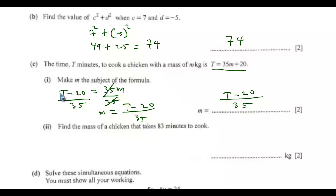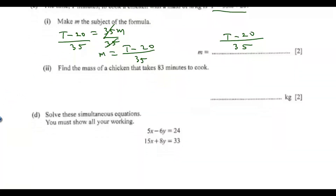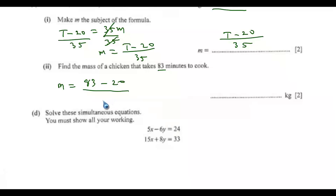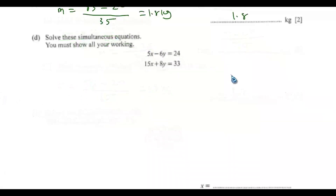Now find the mass of a chicken that takes 83 minutes to cook. Since we've made m the subject, substitute T equals 83: m equals (83 minus 20) over 35. Inputting this into a calculator gives m equals 1.8 kilograms.